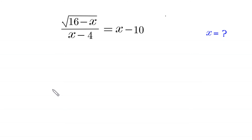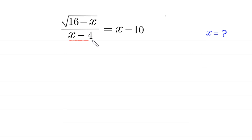Hello everyone, welcome to how to solve this very nice radical equation: the square root of (16 minus x) divided by (x minus 4) is equal to x minus 10. We need to find all possible values of x. Since the expression (x minus 4) is in the denominator, x cannot be equal to 4.